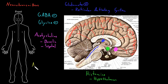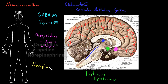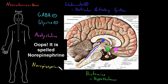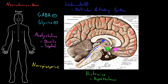Next is norepinephrine. There's an area in the pons where neurons send diffuse projections of norepinephrine up to the cerebral cortex. That area is called the locus coeruleus. I've seen a few different spellings of this, but any of them are fine.